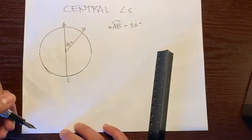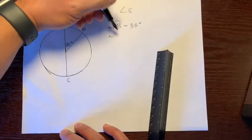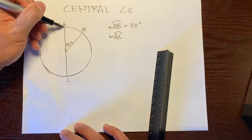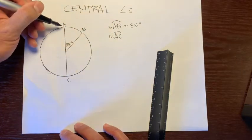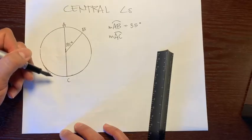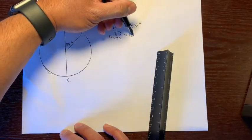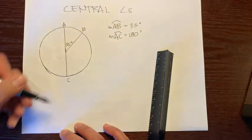And let's say the question said, what is the measure of arc AC? So we're going from here all the way to here, or here going all the way to here, it doesn't matter because you'll get the same answer. Half of 360 is 180 degrees.